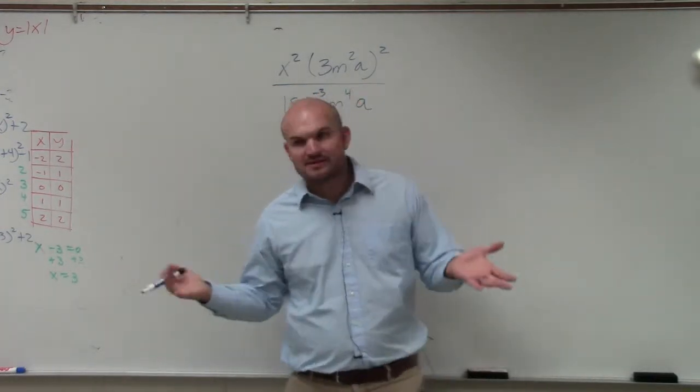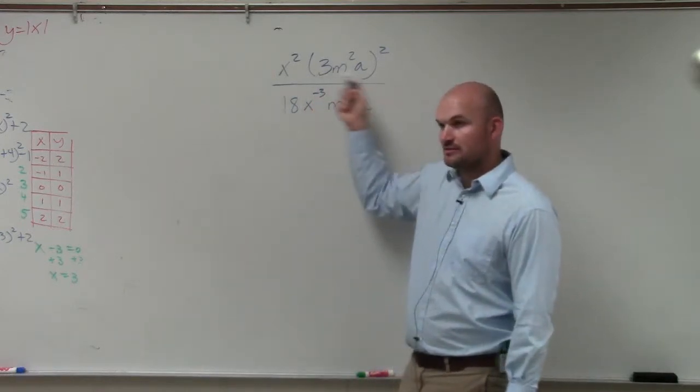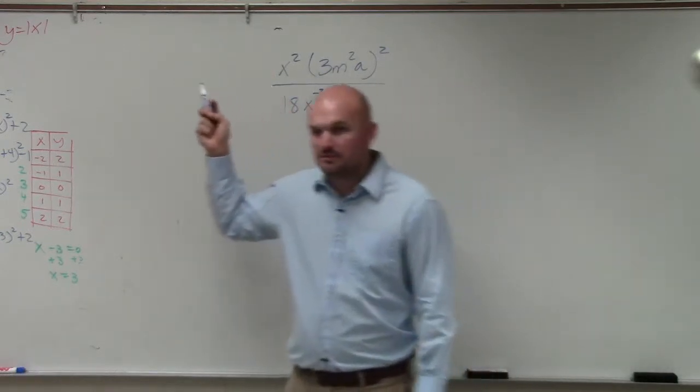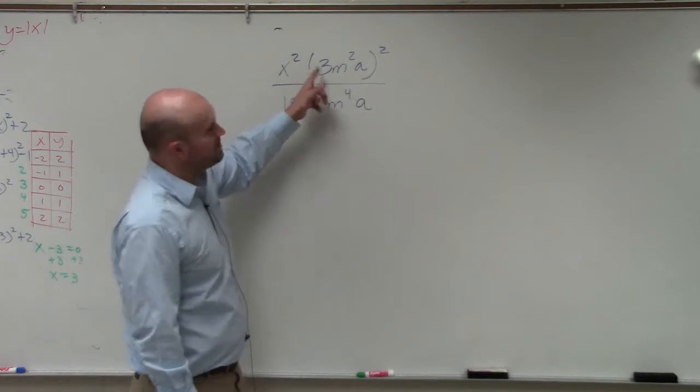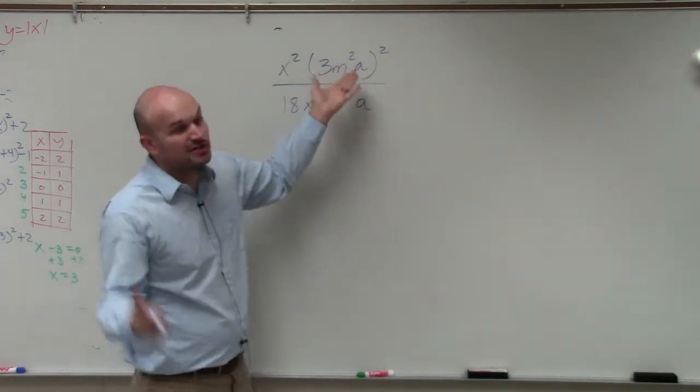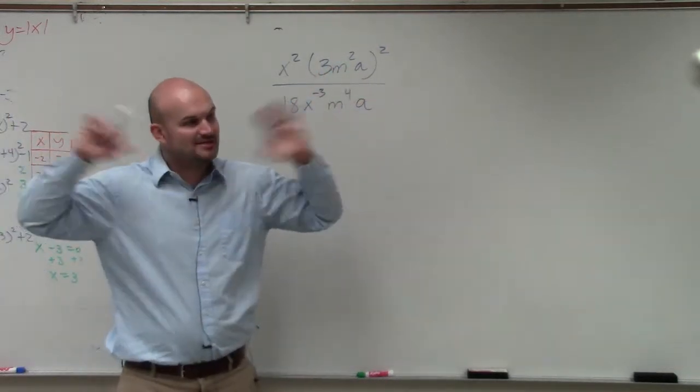So the rules of exponents, first thing to talk about is parentheses. So inside these parentheses, can we simplify anything? Yes. I can't multiply three times m squared any further. I can't multiply them times a. So they're actually simplified. So inside the parentheses, we're good.